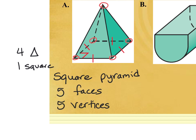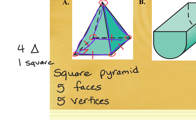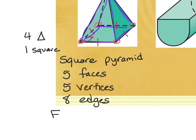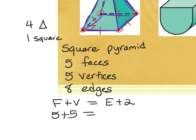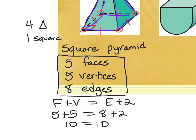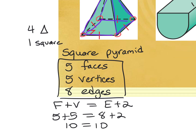The vertices are one at the top and four around the base, for a total of five vertices. The edges — counting all intersections of faces — total eight. The dotted lines represent hidden edges behind the figure. Using Euler's theorem to check: five faces plus five vertices equals ten, and eight edges plus two also equals ten, confirming the counts are correct.